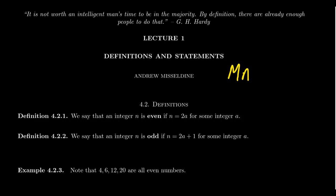At Southern Utah University, this class is called Math 3120. It has the name of Transition to Advanced Mathematics. As this is the very first video in our lecture series, I think it deserves us to explain what does it mean to transition to advanced mathematics.